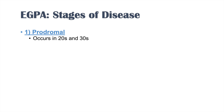There are certain stages of eosinophilic granulomatosis with polyangiitis. The first is the prodromal stage, which generally occurs in patients in their 20s and 30s. They present with atopic disease — you can think of the atopic triad. Allergic rhinitis and asthma are the two big ones seen in this stage, with symptoms like runny nose, wheezing, and shortness of breath.